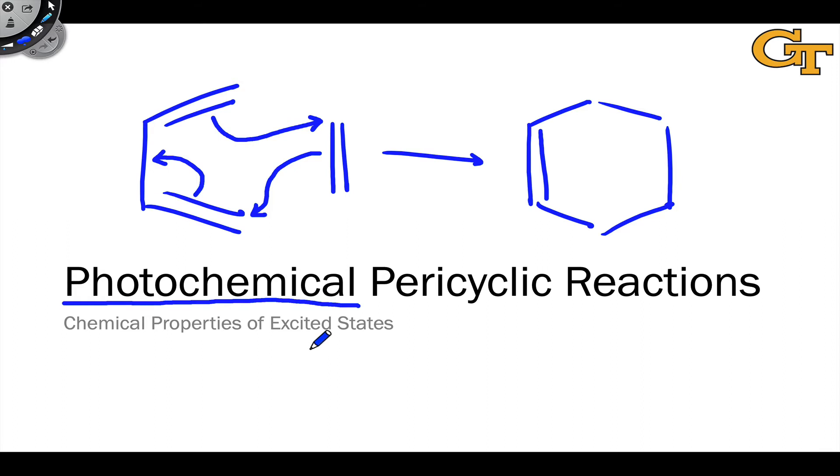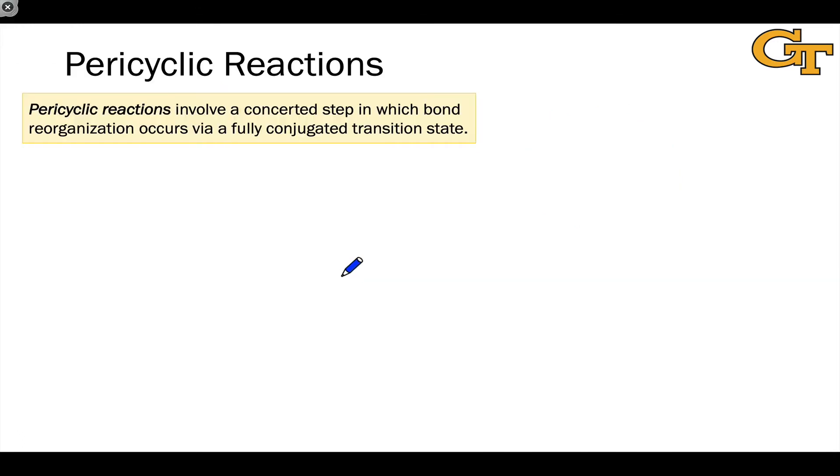We'll get into more details when we talk about the photochemistry of alkenes and aromatics in later videos. We can talk about pericyclic reactions more precisely by stipulating that pericyclic reactions involve a fully concerted step with multiple bonds forming and breaking at the same time, in which bond reorganization happens through a transition state that is completely or fully conjugated, meaning there's a cyclic array of p orbitals or pi-type orbitals spanning all of the atoms involved at the transition state.